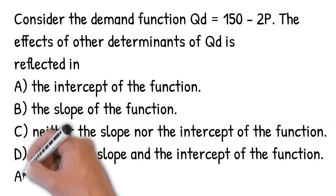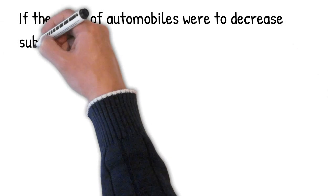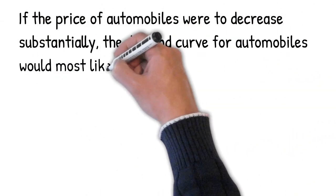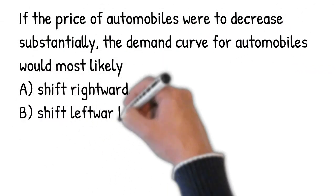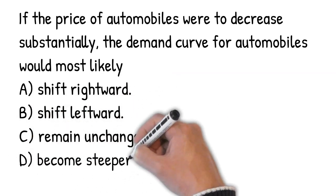The effect of other determinants of quantity demanded is reflected in the intercept. The change in price will lead to a movement along the demand curve. It will not shift the demand curve or rotate the demand curve.